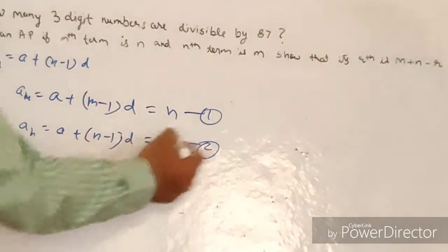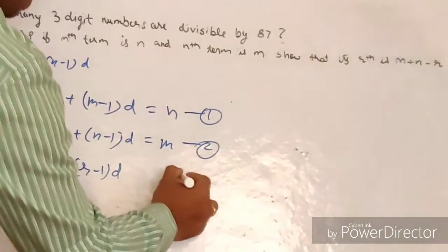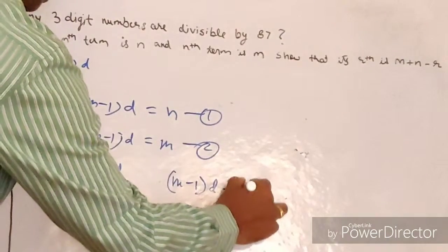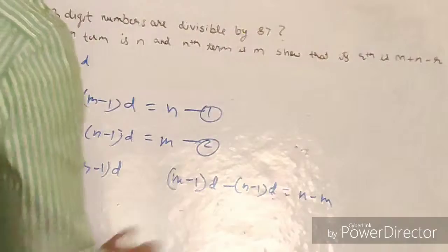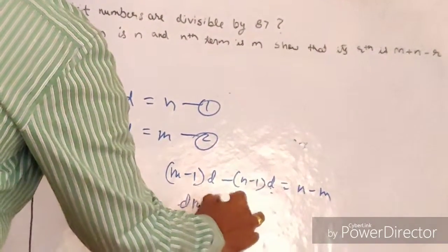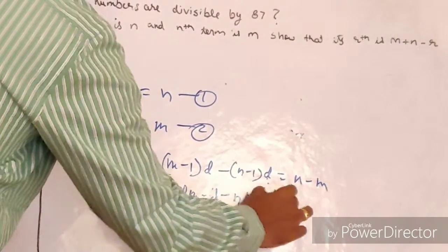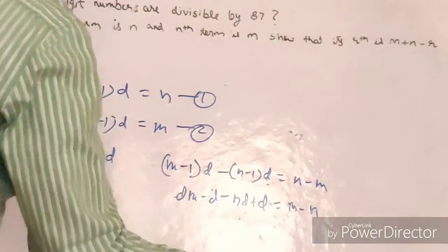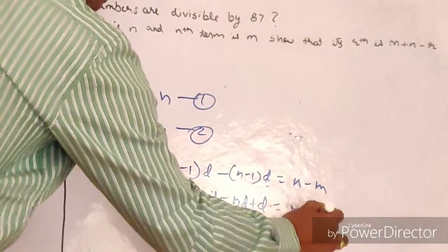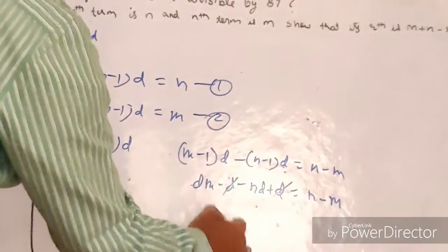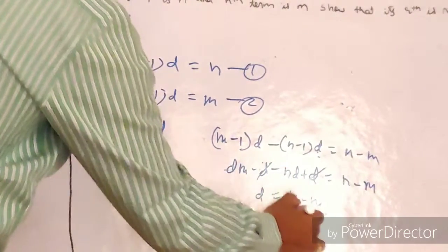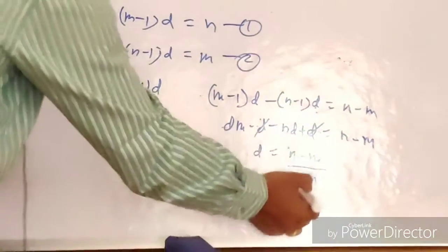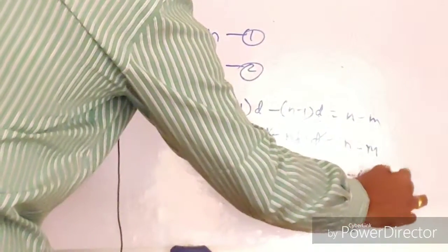Subtracting equation 2 from equation 1: [a + (m−1)d] − [a + (n−1)d] = n − m. This gives: (m − 1)d − (n − 1)d = n − m, which expands to: dm − d − dn + d = n − m. The −d and +d cancel, leaving d(m − n) = n − m. Therefore d = (n − m)/(m − n) = −1.